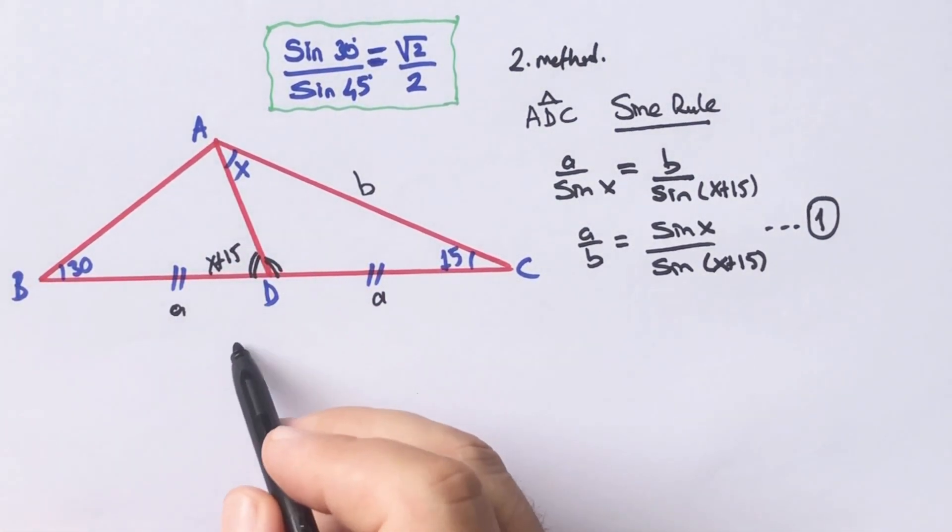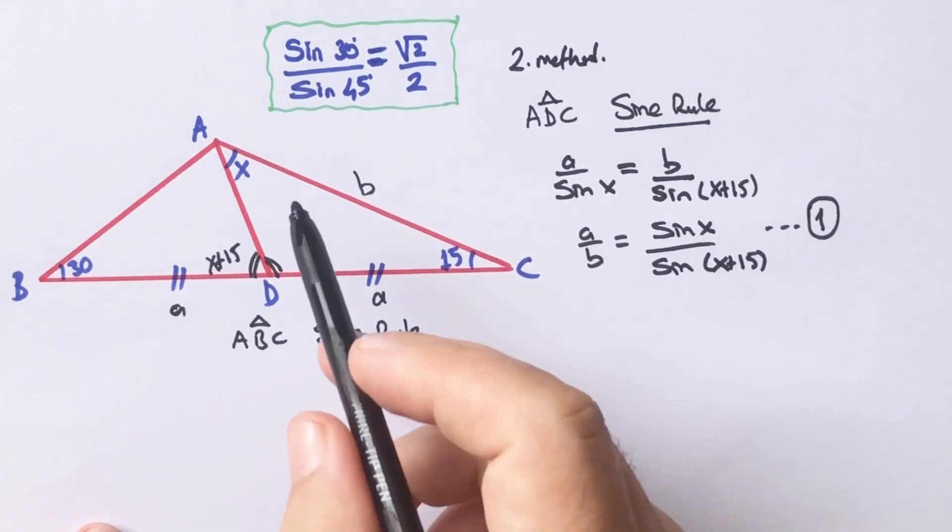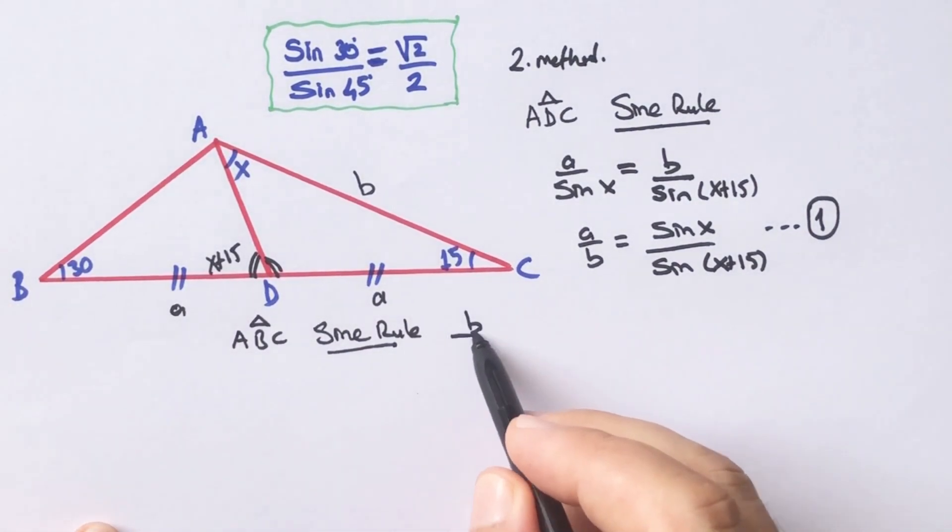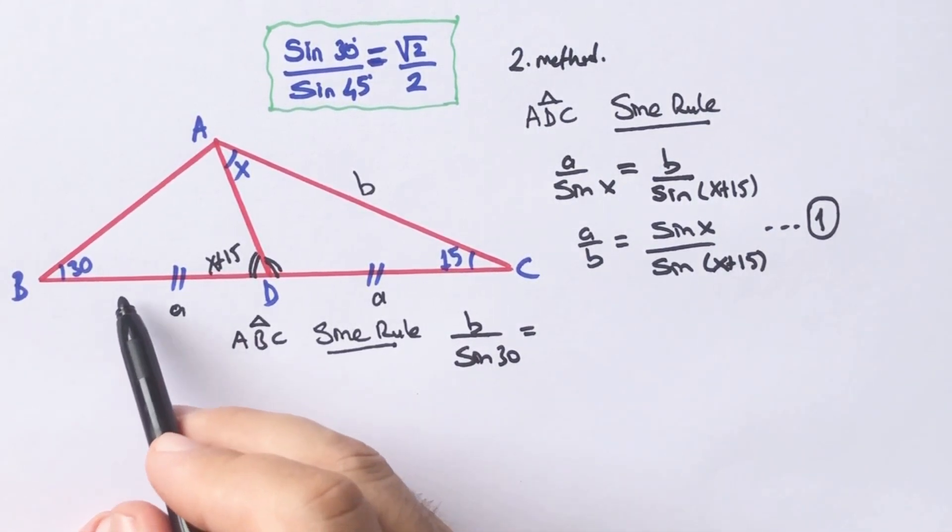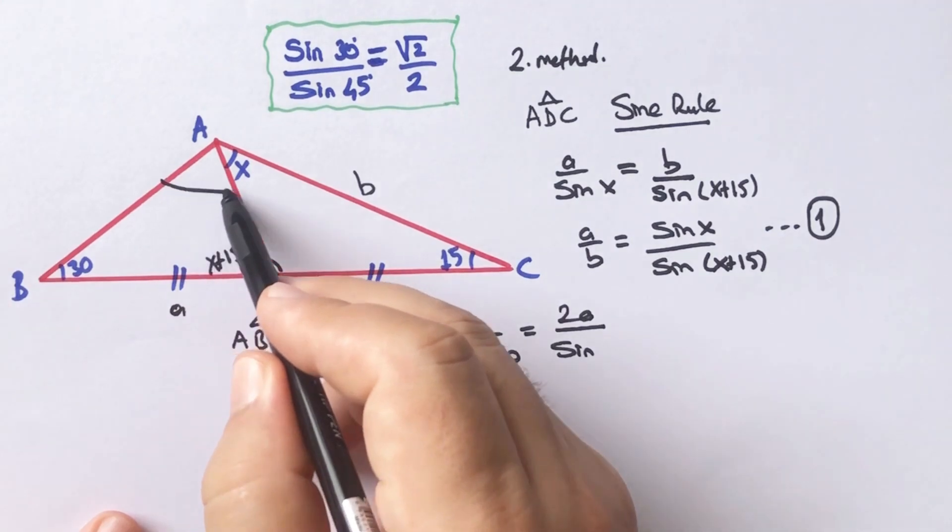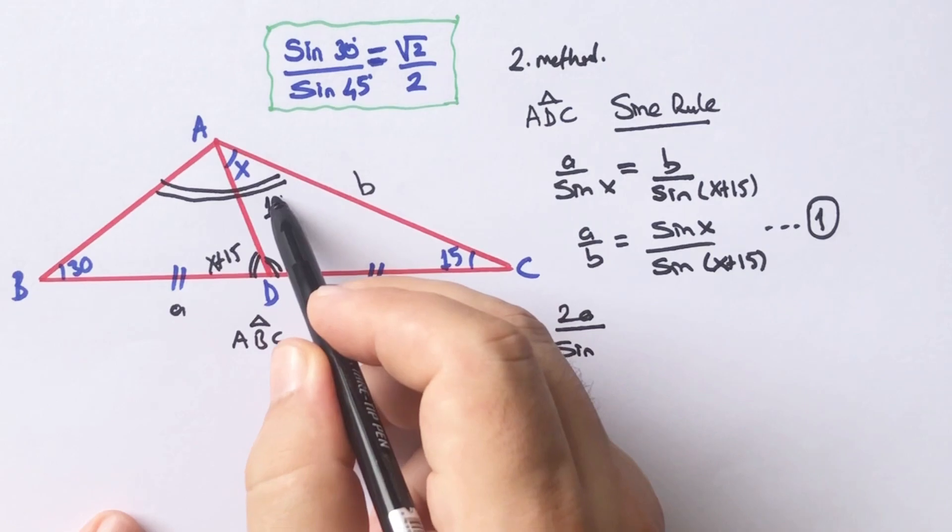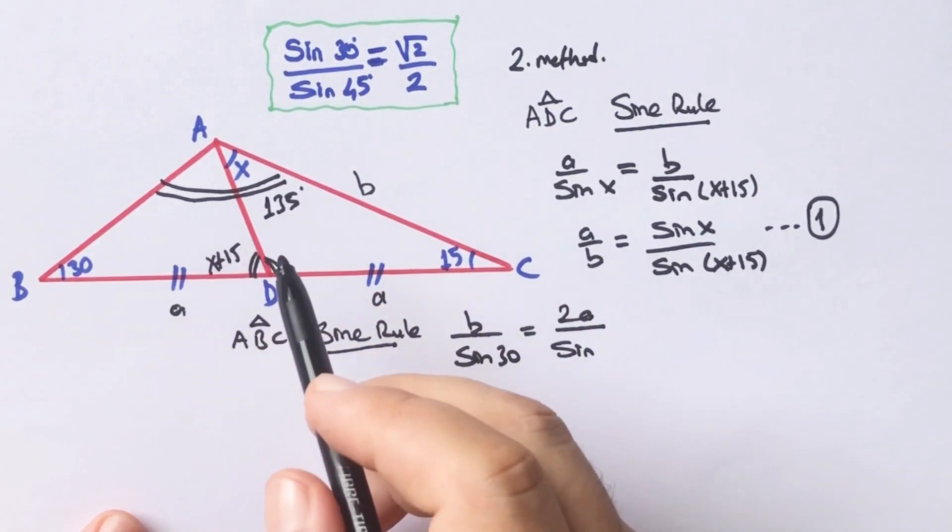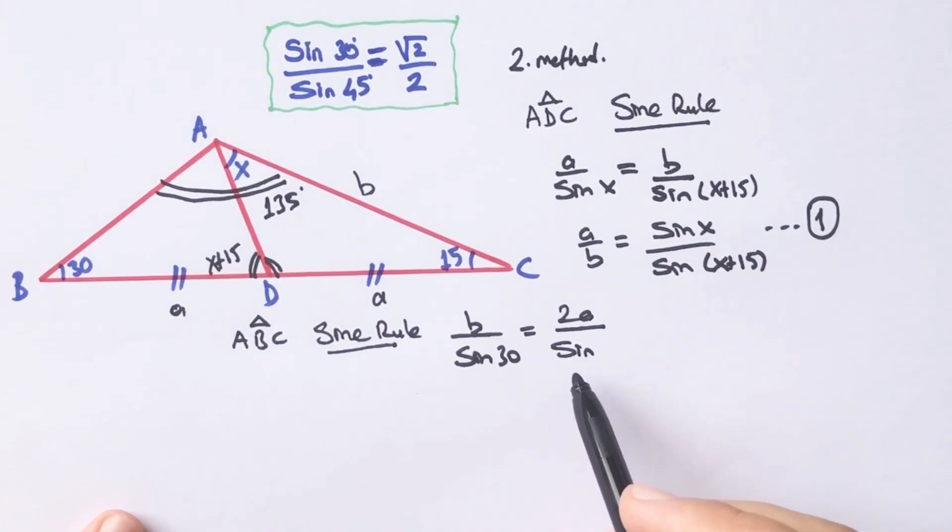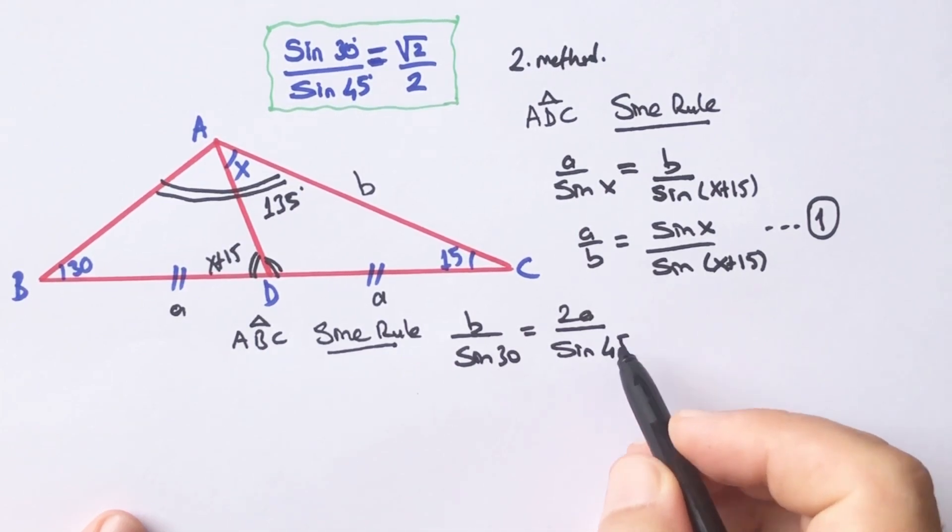If you focus on the biggest triangle, let's apply sine rule. B over sine 30 must be equal to this length, which is 2a, over sine this angle, which is 135. You know that we can calculate sine 45 instead of sine 135.